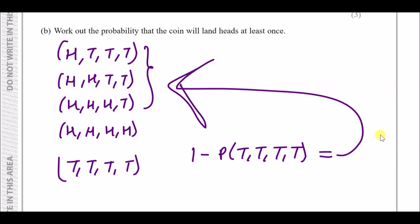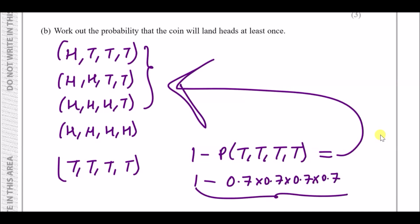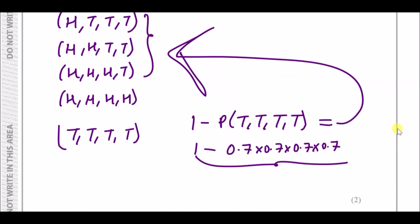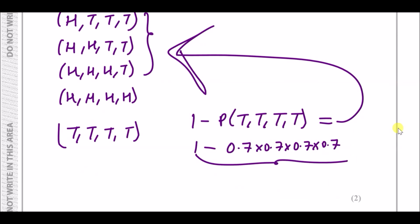Using the complement, the answer is 1 minus 0.7 to the power 4, which gives a final answer of 0.7599.